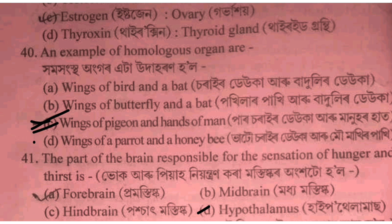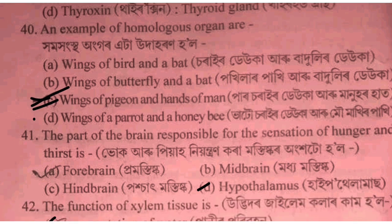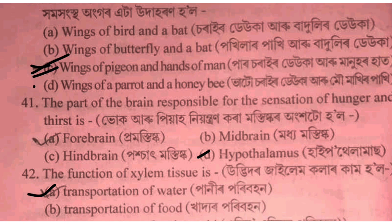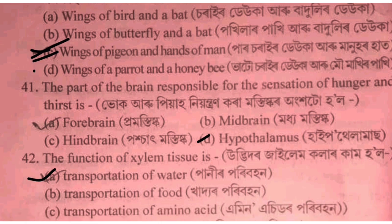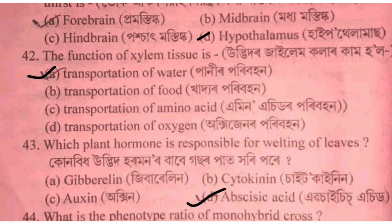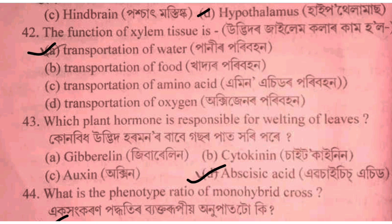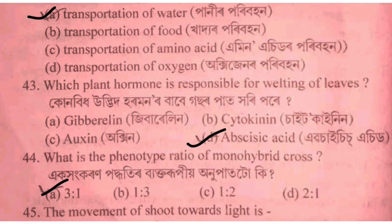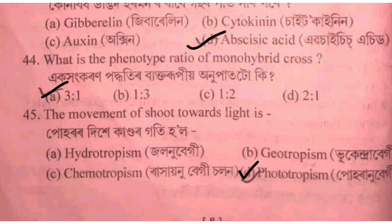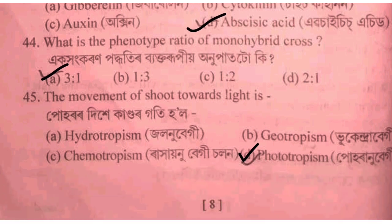The most important option is the hypothalamus. For question 42, xylem transports water — option is the same as phloem. The hormone question answer is abscisic acid (ABA). Question 44: option is 1.45.